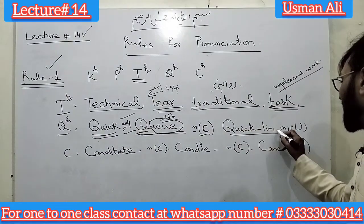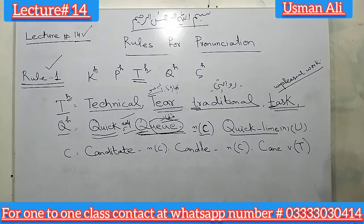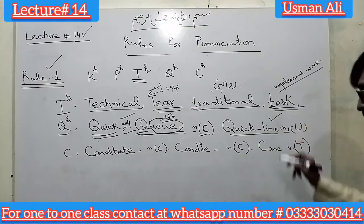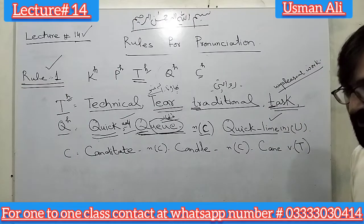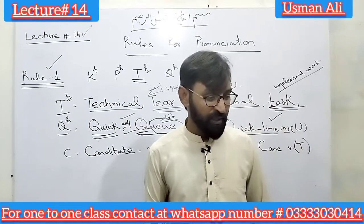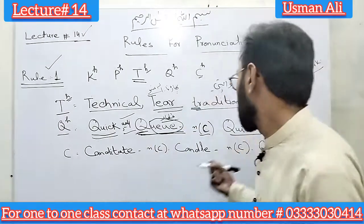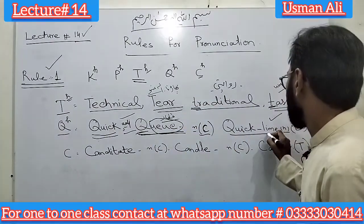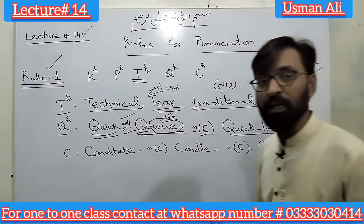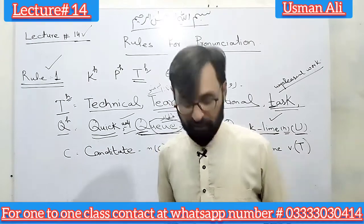Quicklime — this word seems to be missing here. Quicklime: lime. یہ چونے کا جو powder ہوتا ہے، چونے کا powder — اس کو quicklime کہتے ہیں۔ Quicklime is a noun and it is uncountable — ظاہر ہے powder جو ہوتا ہے وہ uncountable ہوتا ہے۔